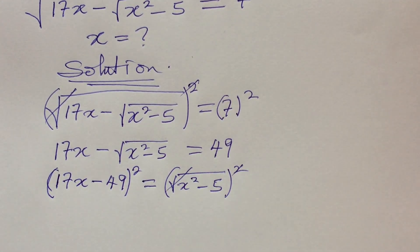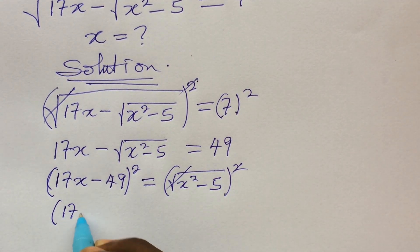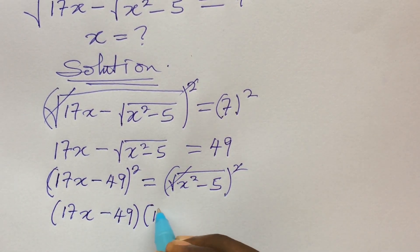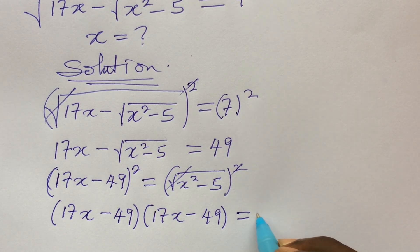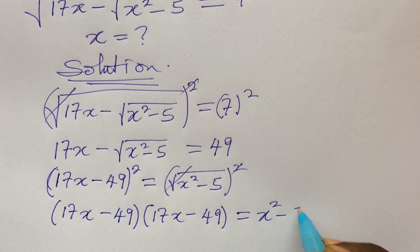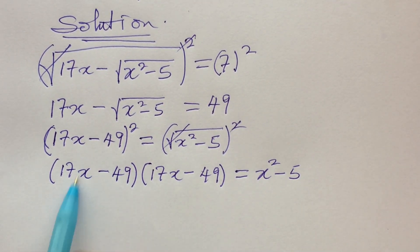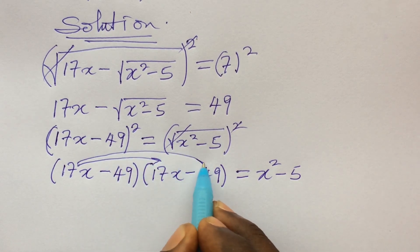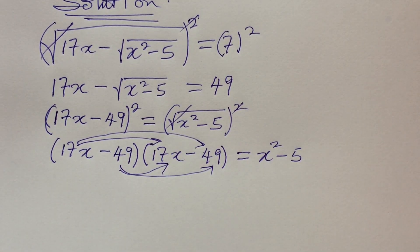This radical goes with this square, so the left-hand side can be rewritten as (17x minus 49)(17x minus 49), everything equal to x squared minus 5. The work is becoming simpler. We now use the first bracket to open up the second bracket — multiply each term across.